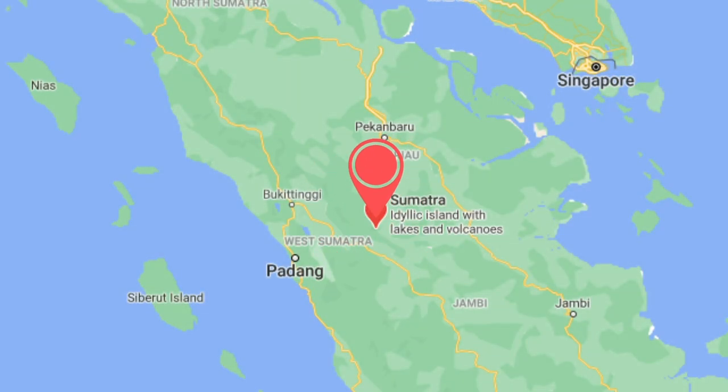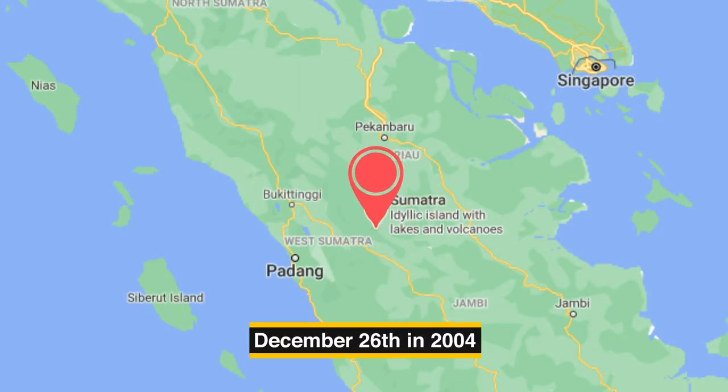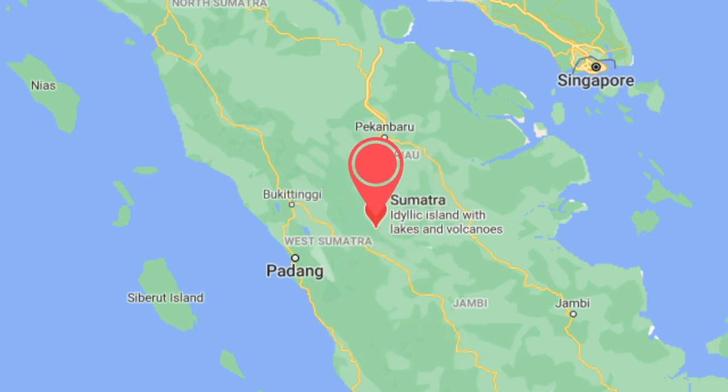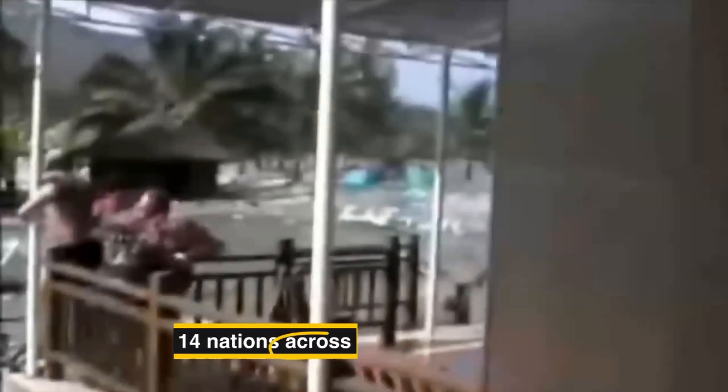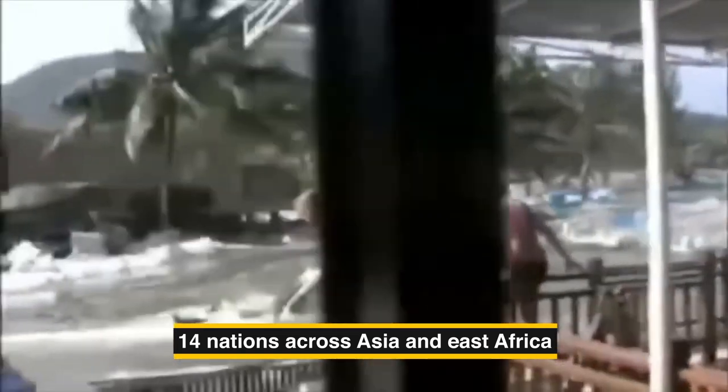Another very strong earthquake hit northern Sumatra on December 26th, 2004, with a magnitude of 9.1, which caused a tsunami and affected many areas. The death-dealing wave was felt in 14 nations across Asia and East Africa, triggered by a megathrust, since the Indian structural plate was constrained underneath the Burmese plate.